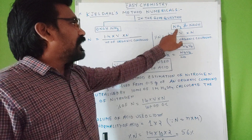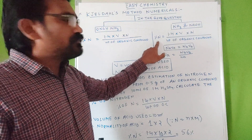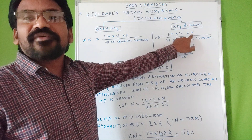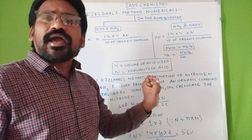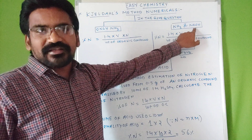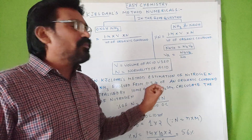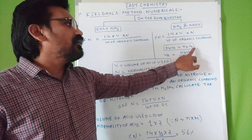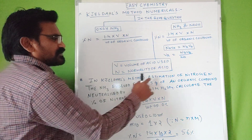If in the given numericals both NH3 and NaOH are present, then percentage of nitrogen equals 1.4 × (volume of acid used × normality of acid) ÷ weight of organic compound. We also have to calculate how much volume of acid was used, because if NaOH is present the titration is a back titration. Hence we calculate the volume of acid using the formula: NA × VA = NB × VB.